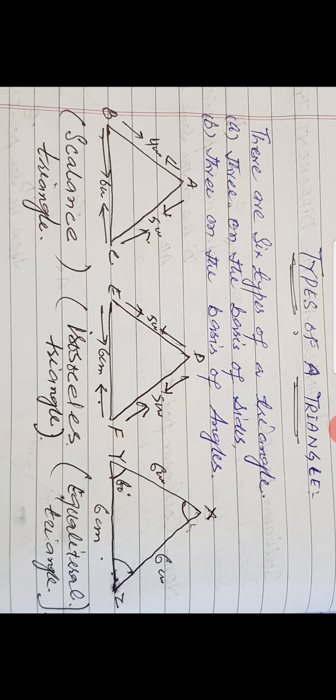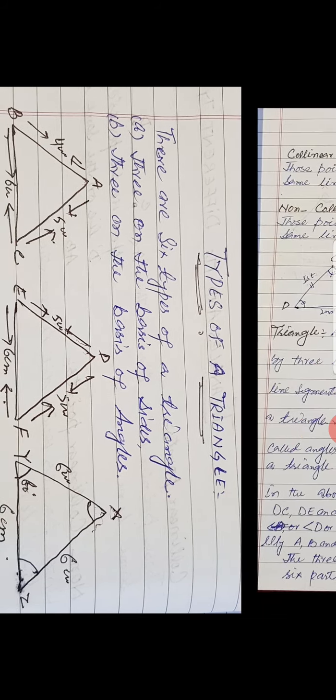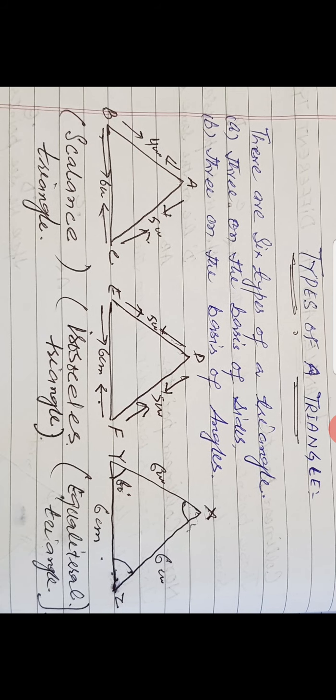Now, my dear students, there are six types of triangle. Three types are on the basis of sides, and three types are on the basis of angles. So three plus three equals six types of triangle.